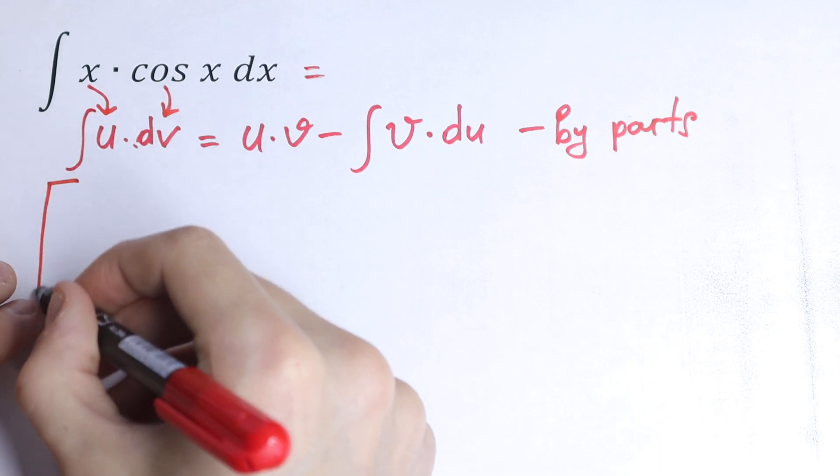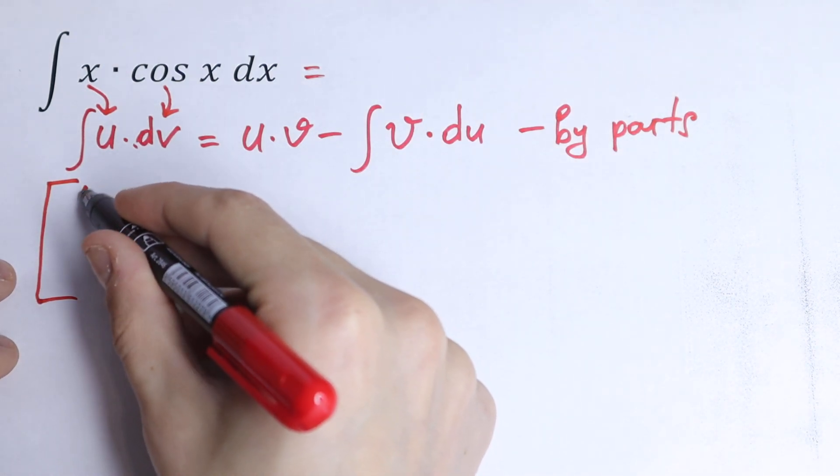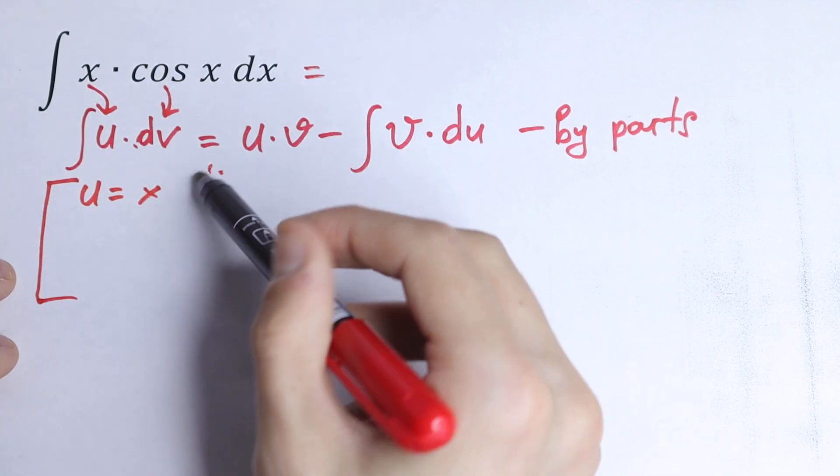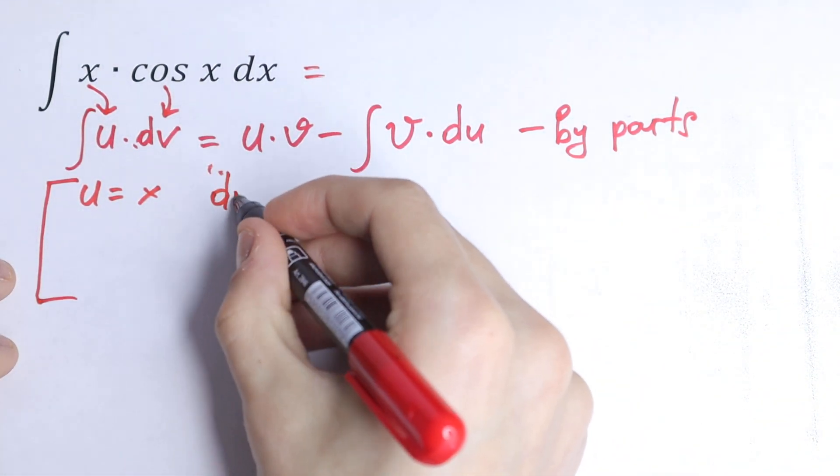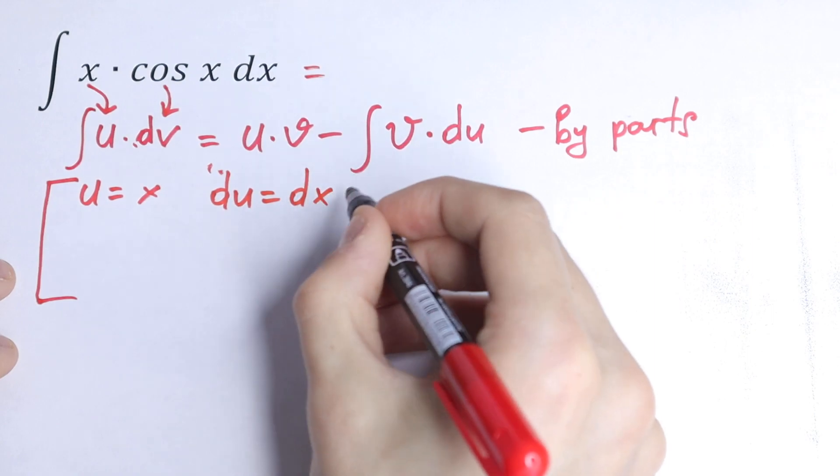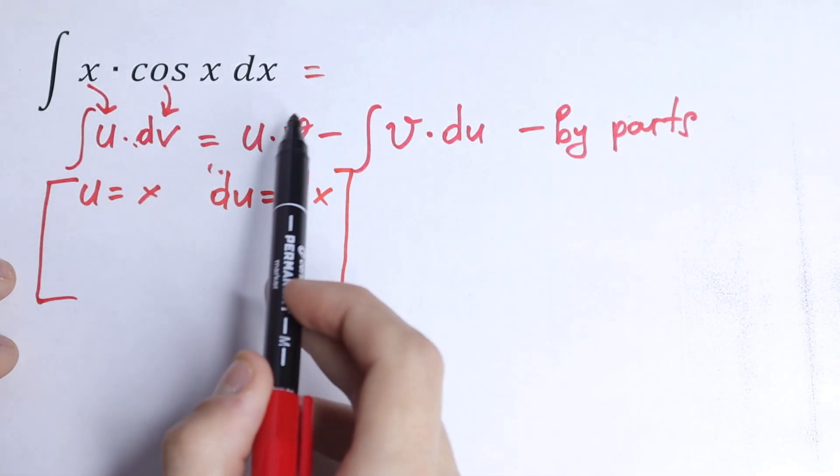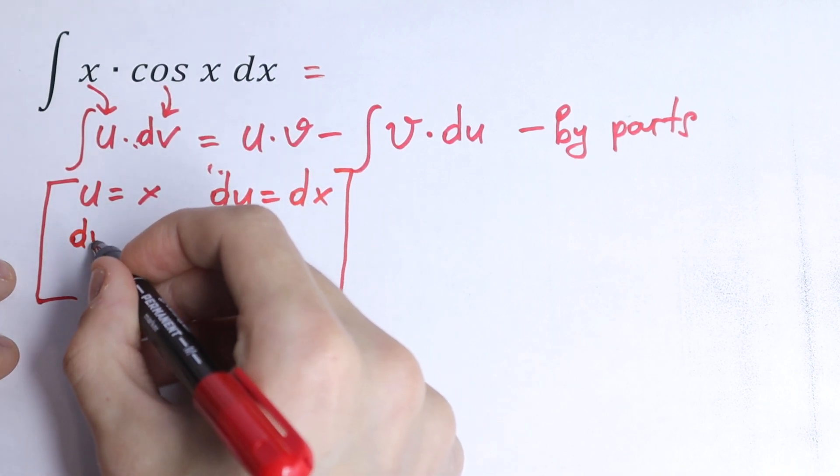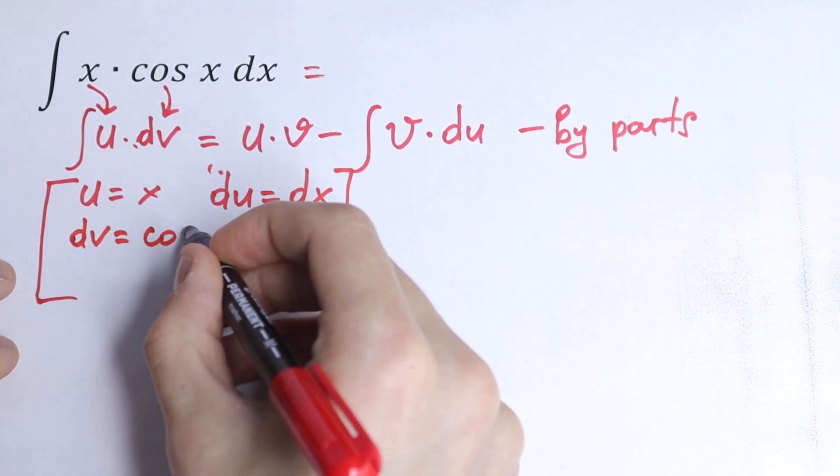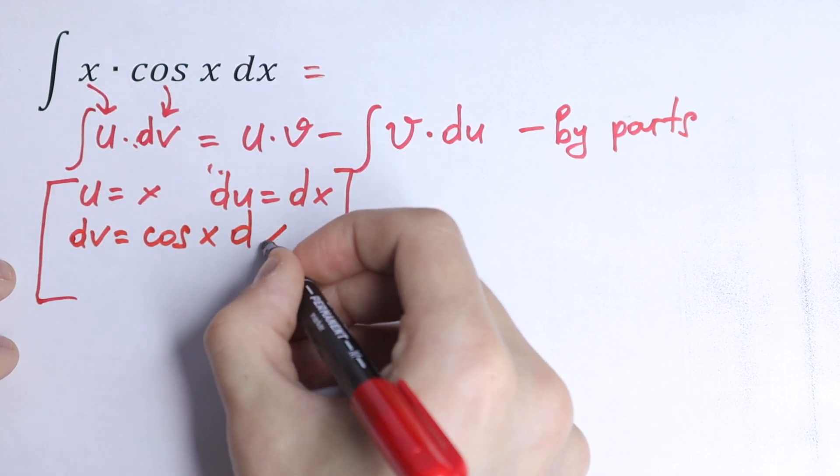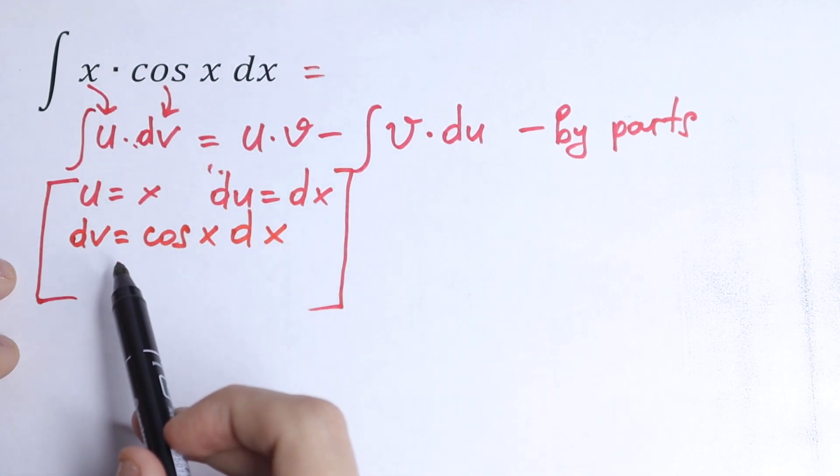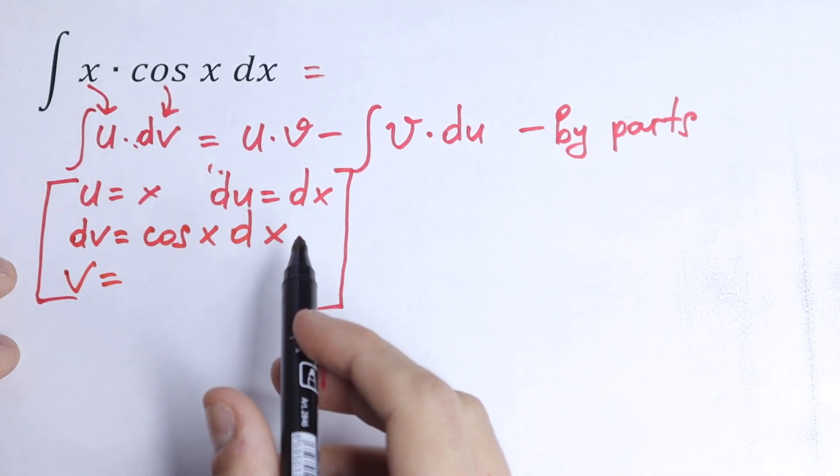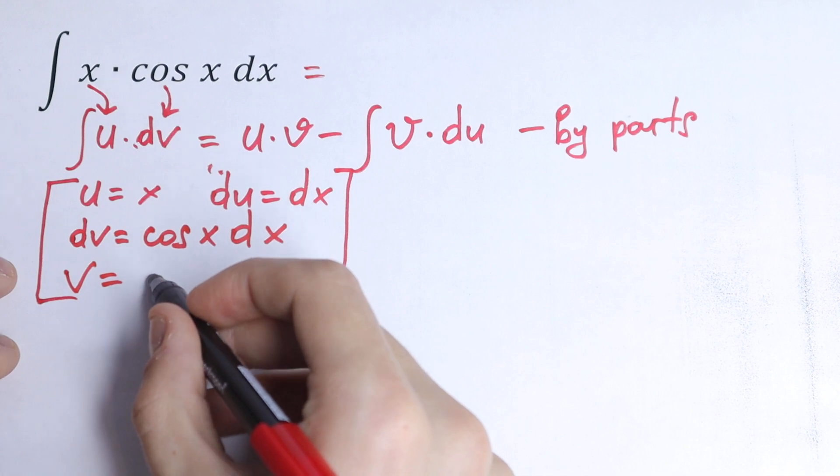So we will have our substitution: u will be x, then du will be dx. For this formula we need dv, which will be cosine x dx, and v will be the integral, so v will be equal to integral of cosine, which is sine x.